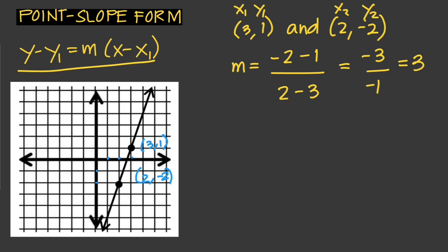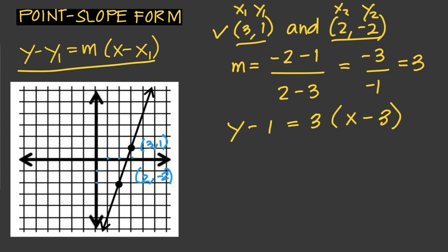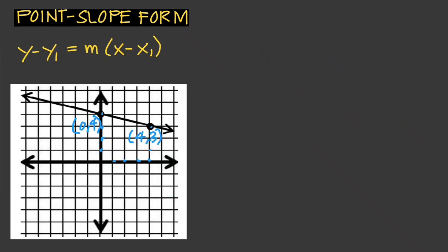Now we can write the equation in point-slope form by plugging in the values of x, y, and the slope. Choosing point (3, 1), the equation is: y - 1 = 3(x - 3). This is our equation in point-slope form.